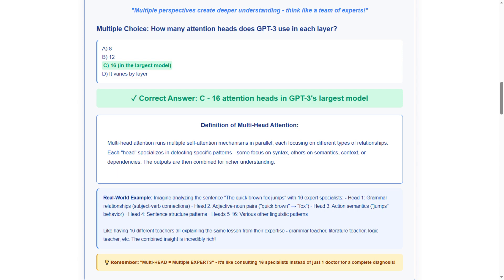Each head specializes in detecting specific patterns. Some focus on syntax, others on semantics, context, or dependencies. The outputs are then combined for richer understanding. Simply stated, it's parallel expert analysis.